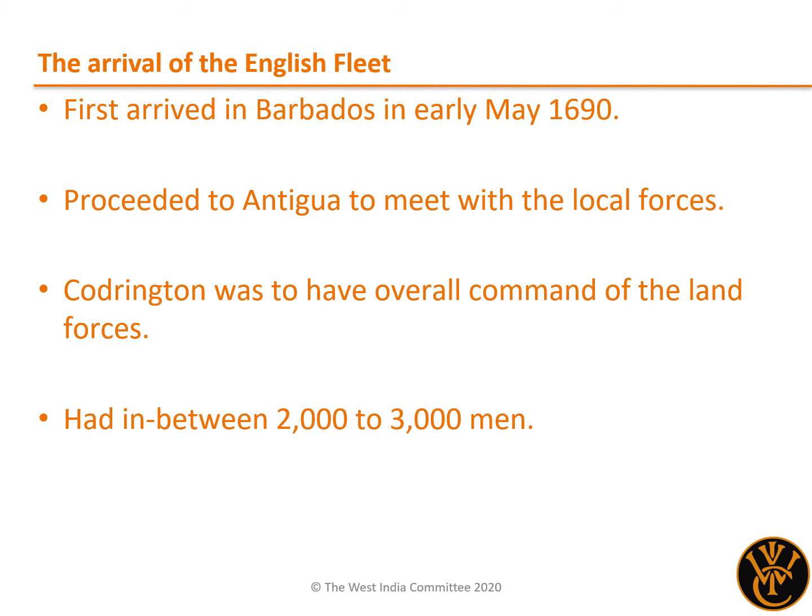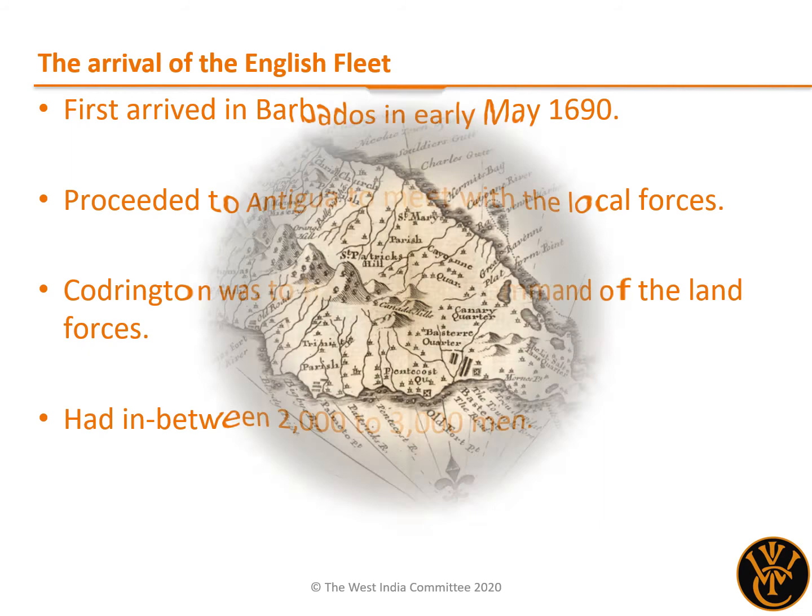The English fleet first arrived at Barbados in early May 1690, where it was forced to remain for the rest of the month due to great sickness amongst the men, before proceeding to Antigua to meet up with Colonel Codrington's forces. Codrington was to have overall command of the land forces during the campaign. He was disappointed with the number of men that had arrived, believing that between the Leeward Island's militia, what remained of the Barbadian militia, and Holt's men, they had a landing force of only around 2,000, although later estimates placed the figure possibly as high as 3,000.